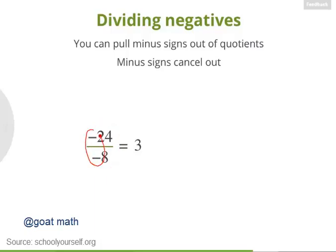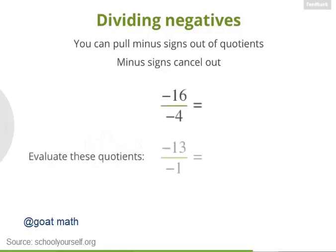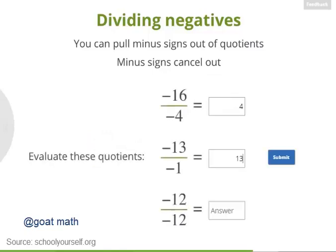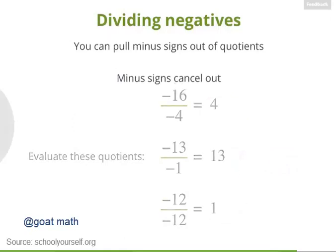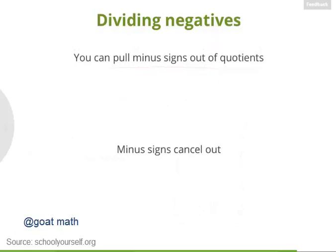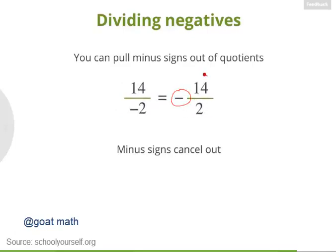So keep an eye out for minus signs that you can cancel. So just to review: you can pull minus signs out of quotients. To evaluate 14 divided by negative 2, you can pull out the minus sign, so it's negative 14 over 2. And minus signs cancel out, so if you're dividing one negative number by another negative number, you can cancel the minus signs and divide the positive numbers instead.